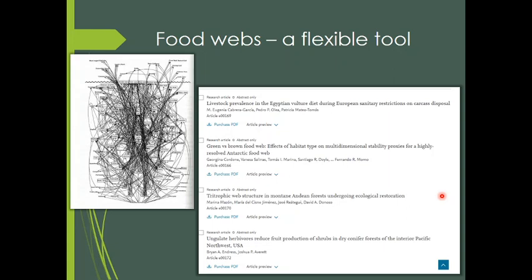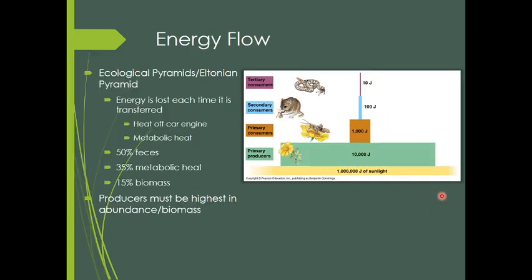One of the first ways to use food webs is looking at an energy flow diagram, often called an ecological pyramid — or by the older name, Eltonian pyramids, after the famous ecologist Elton. In every food web, as things get eaten at different trophic levels, every time energy is transferred, you lose some of it. This is analogous to the heat coming off a car engine.